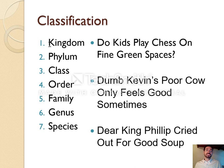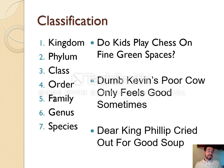Here are the plural forms of each level: one kingdom, two kingdoms; one phylum, two phyla; one class, two classes; one order, two orders; one family, two families; one genus, two genera; one species, two species. The unusual plurals are phyla and genera, though saying 'phylums' and 'genuses' is informally acceptable.